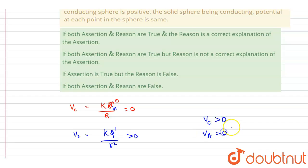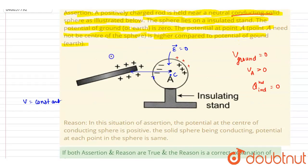So potential at the center is positive. So potential at A will also be positive because, because of induced charge, zero; because of the rod which is at a distance r, it will be positive. So yes, it is positive.